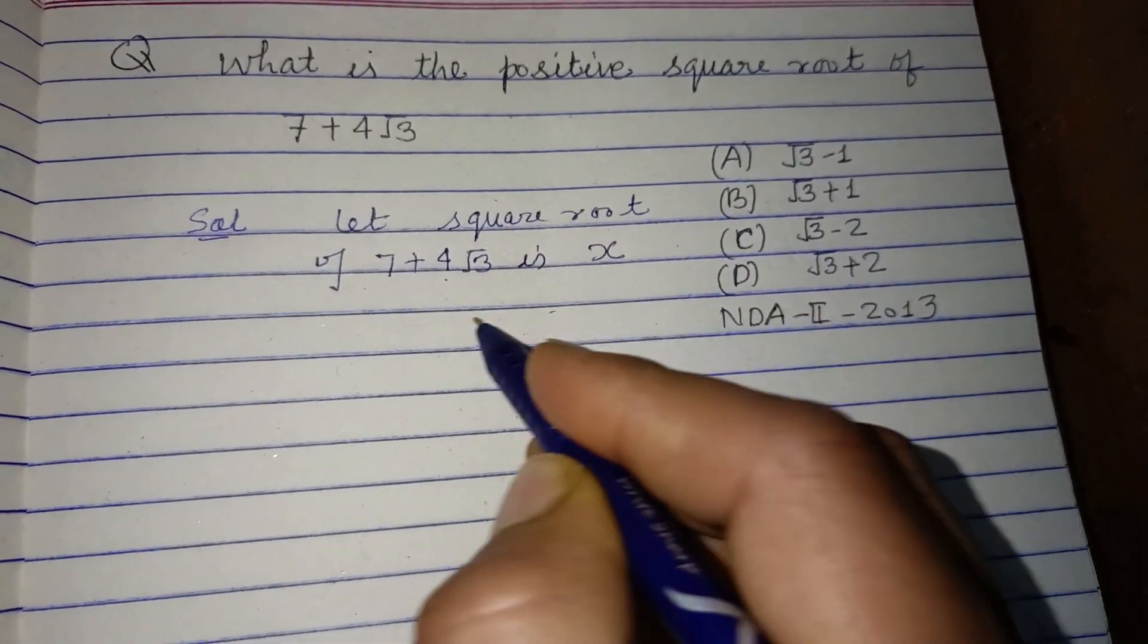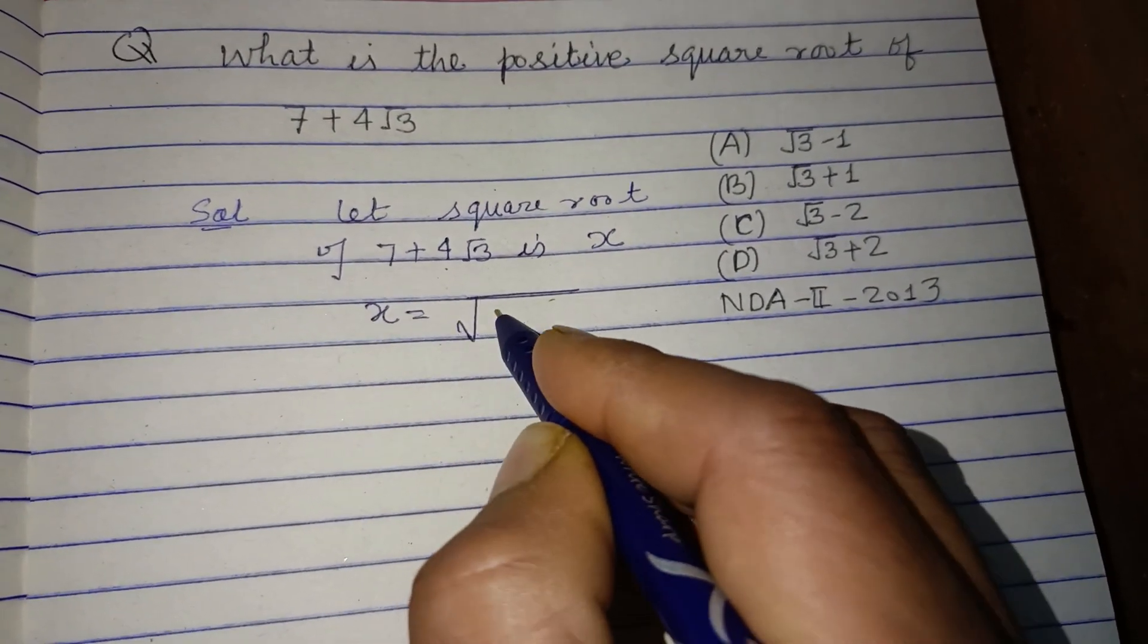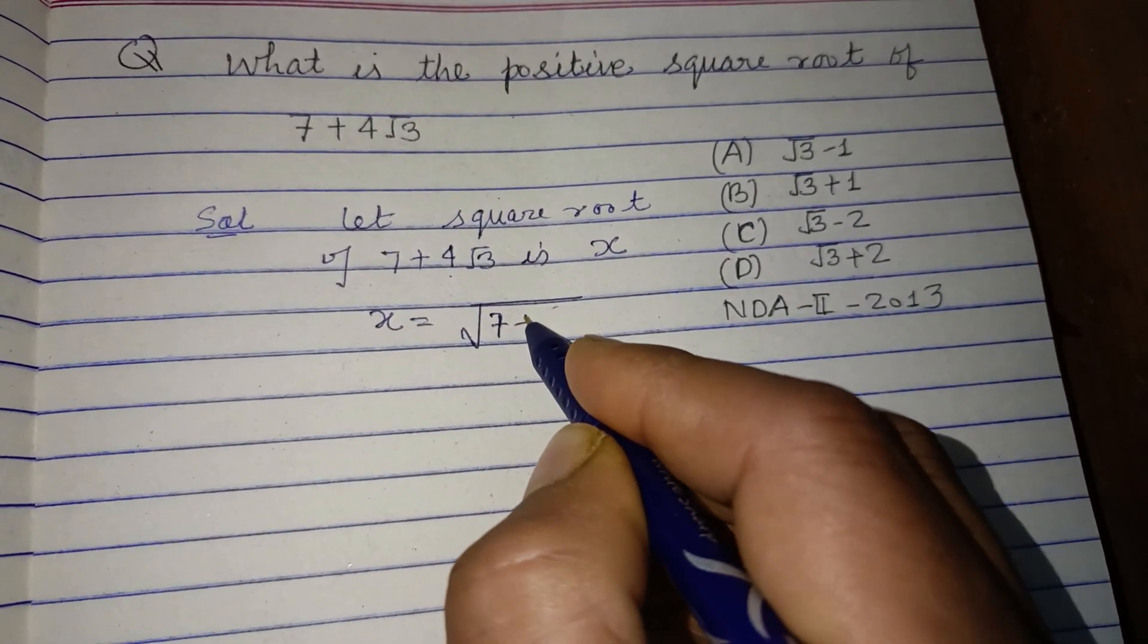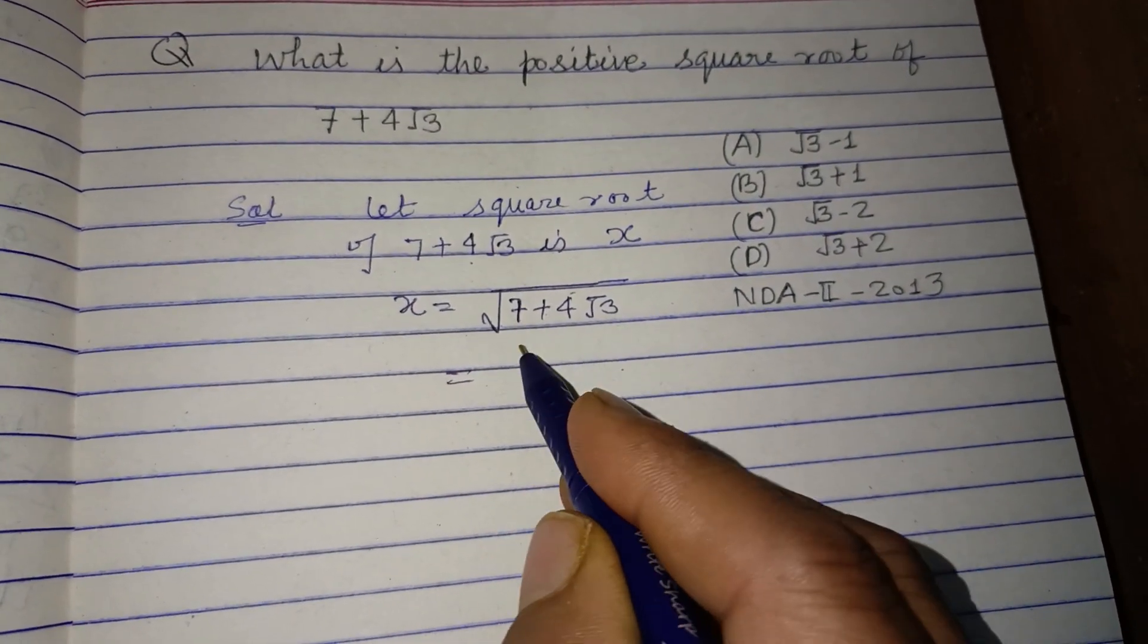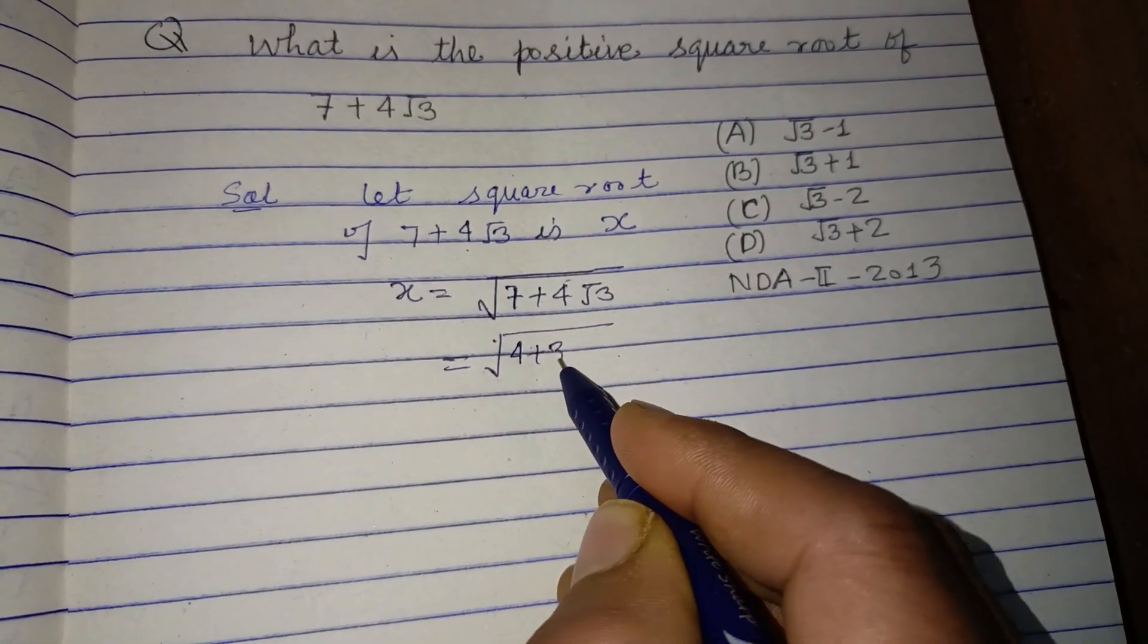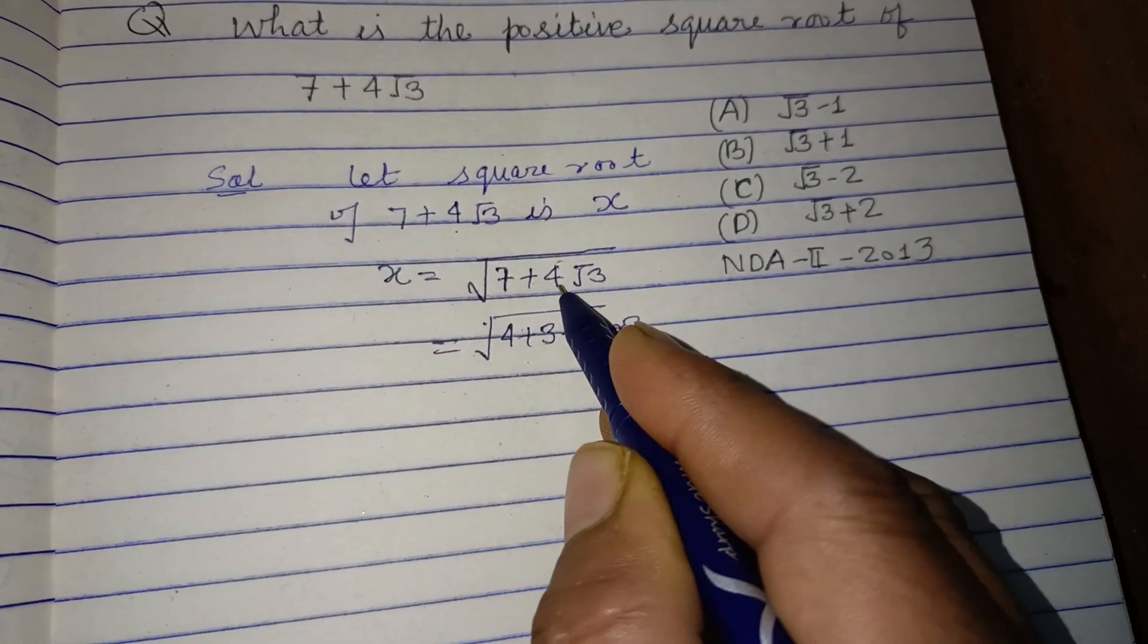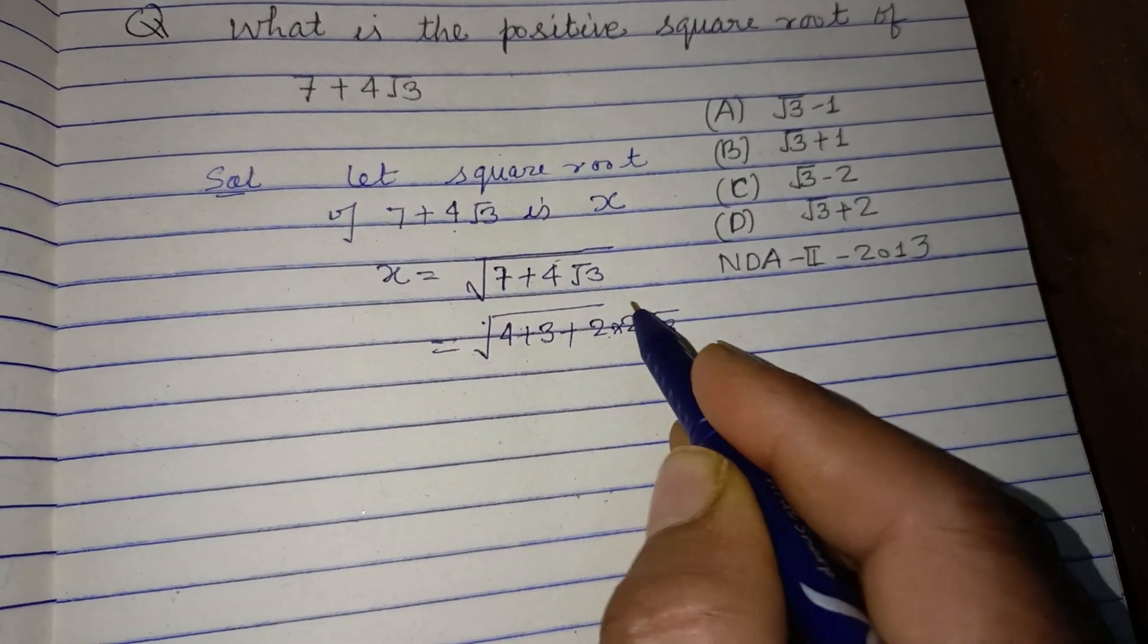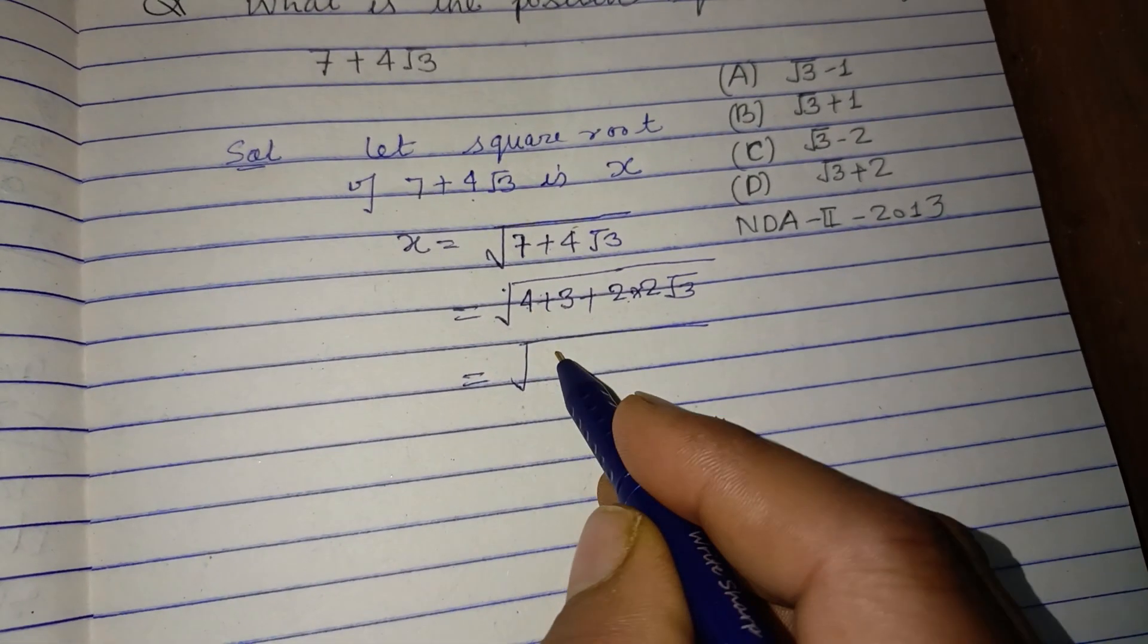So x = √(7 + 4√3). Now we break this: 7 + 4√3 = 4 + 3 + 2×2√3. We can write 4 as 2² and 3 as (√3)², so we have 2² + (√3)² + 2×2√3.